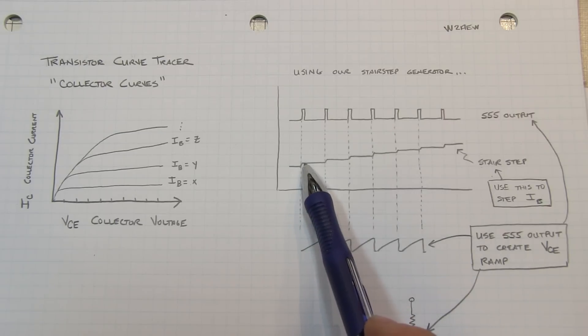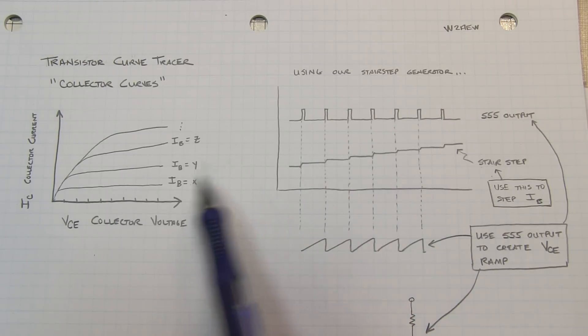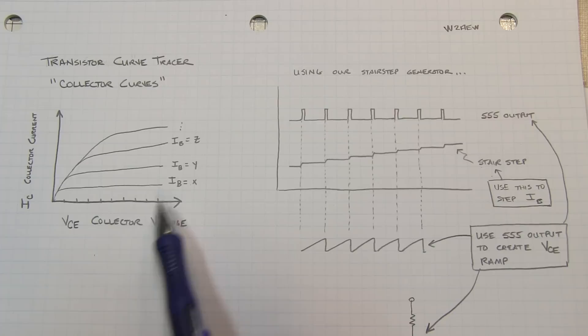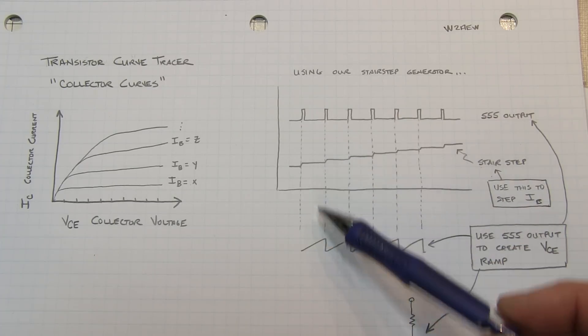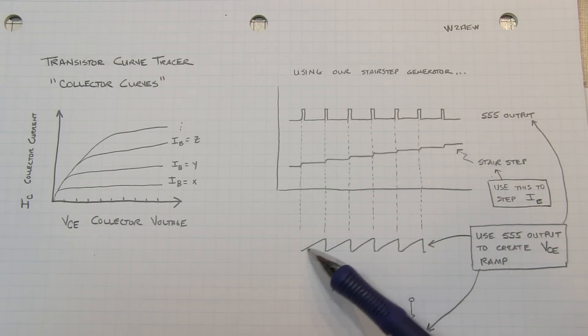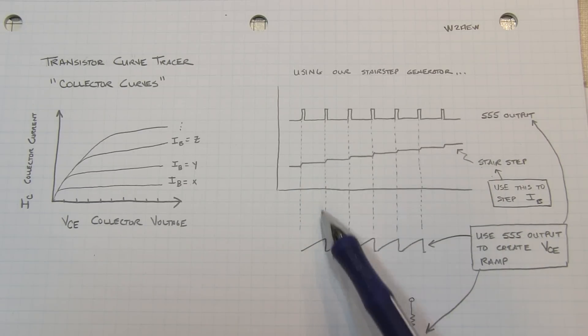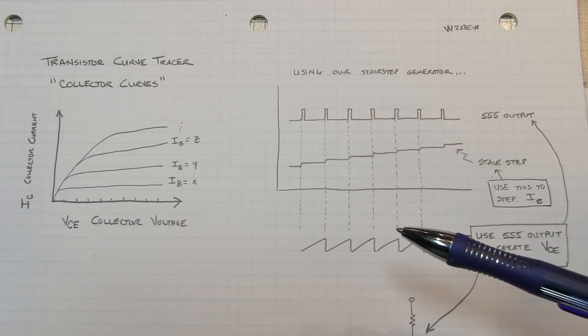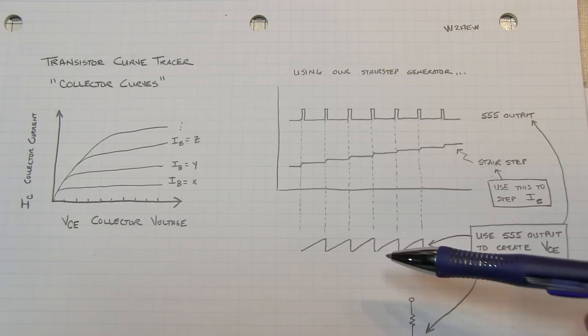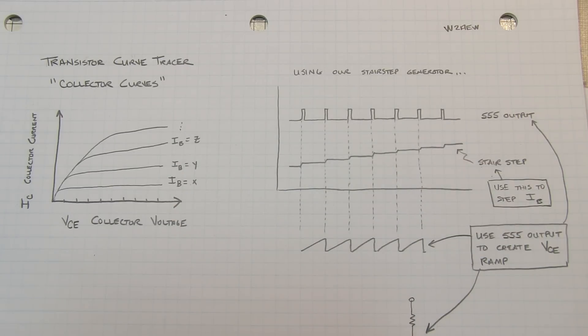And then during each of those steps, during the duration of that step, we want to sweep the collector emitter voltage. So we need to create a ramp voltage that will drive the collector emitter voltage that ramps up during the stair step and then resets at each step and begins over again. So those are the two things we need to add to our stair step generator to turn it into a curve tracer.